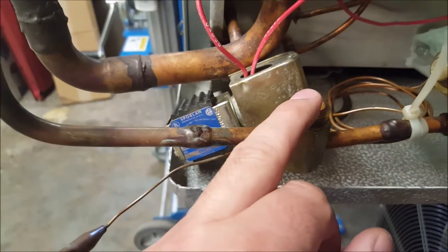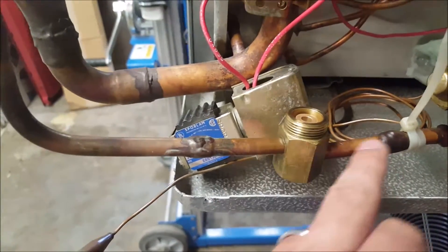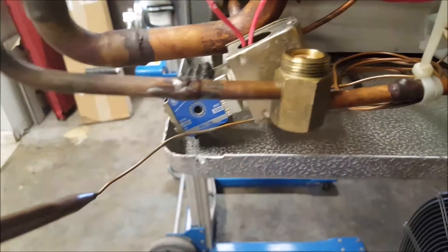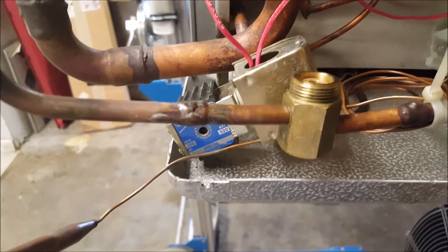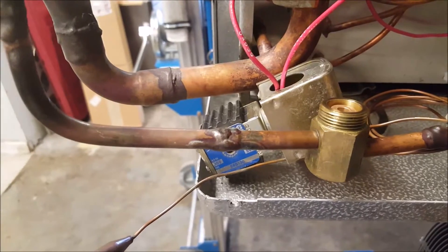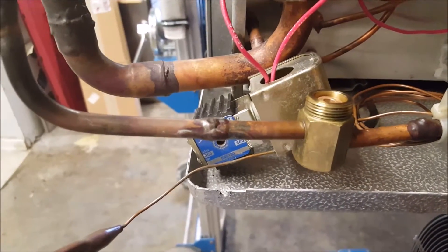That's your solenoid liquid line solenoid valve. If you don't already know this, the purpose of it is to stop refrigerant flow. Once you do that, it actually pumps the system down.